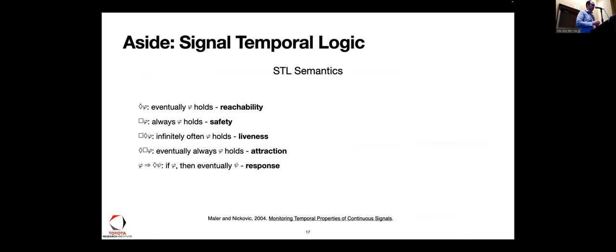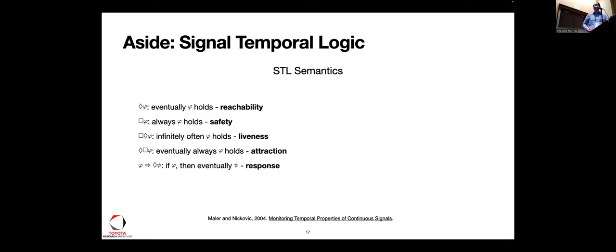Let me take an aside and introduce Signal Temporal Logic (STL). STL is about being able to reason on signals — whether continuous time or discrete time — but reasoning on continuous-valued signals and expressing different properties about them, then testing whether those properties hold. Properties include reachability, safety, liveness, attraction, and response.